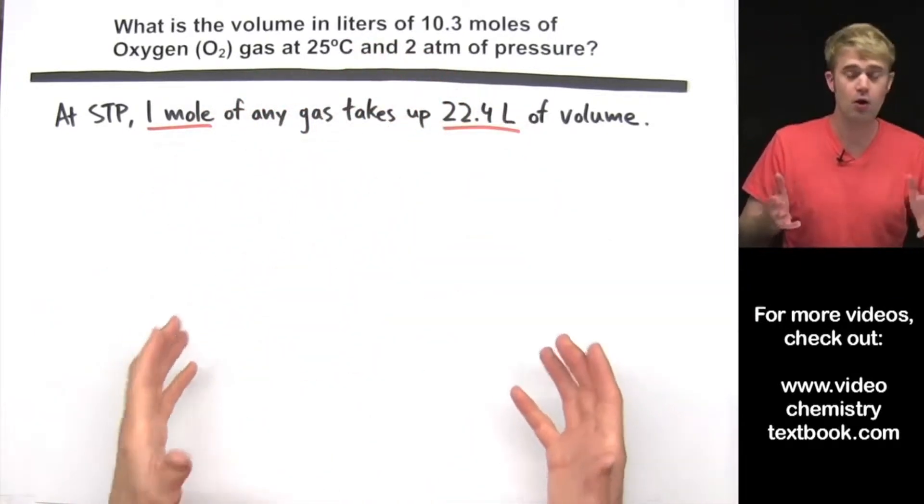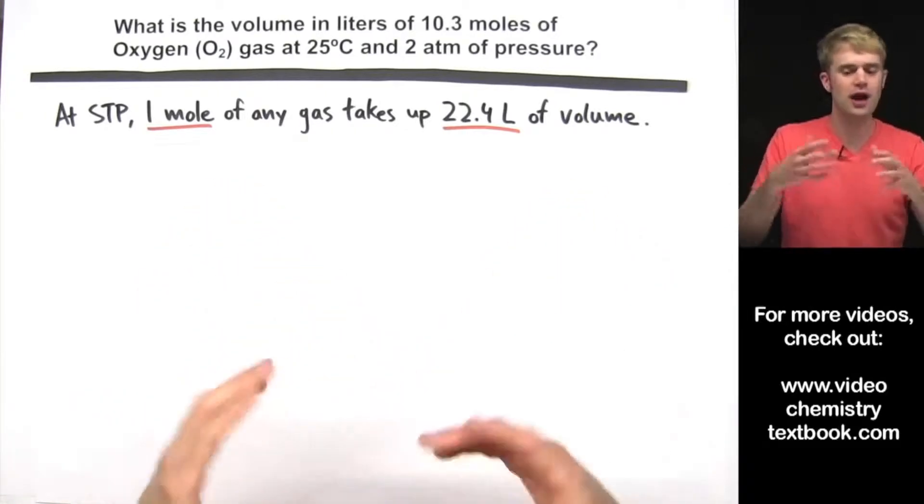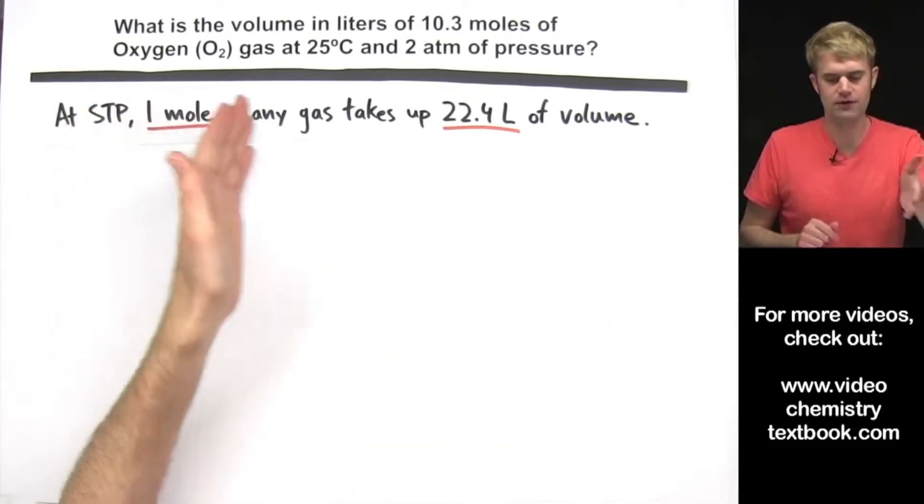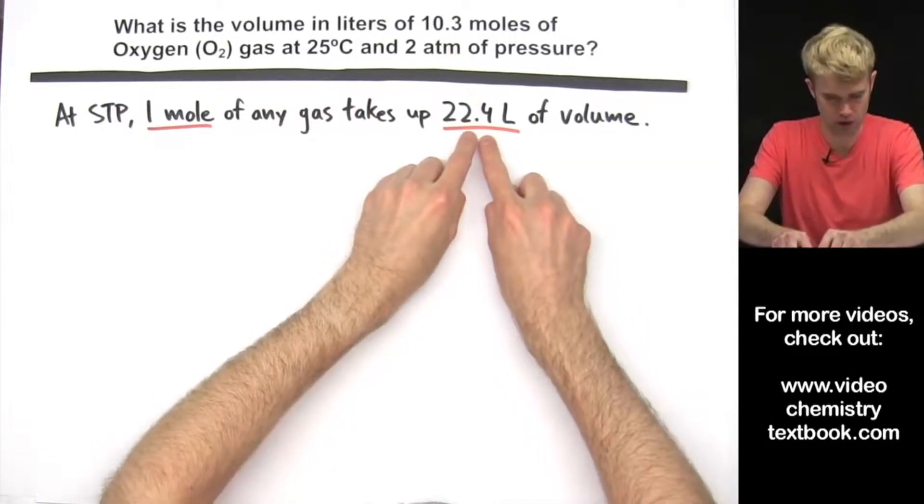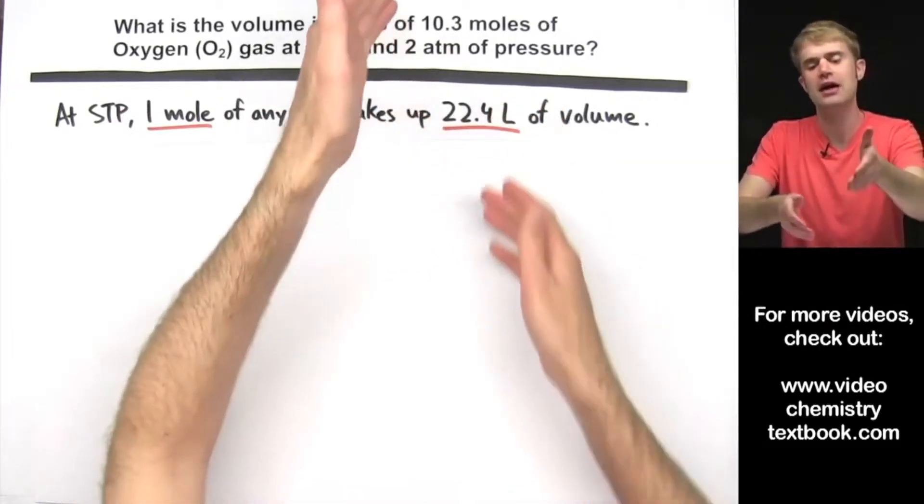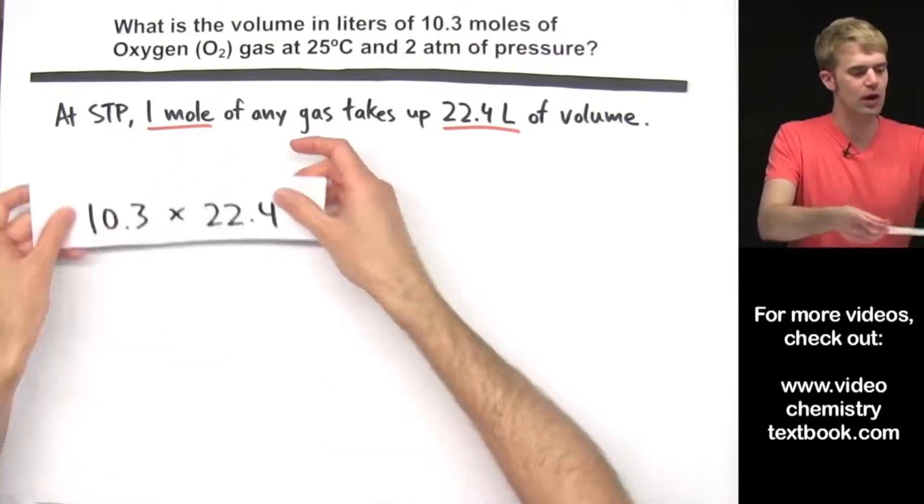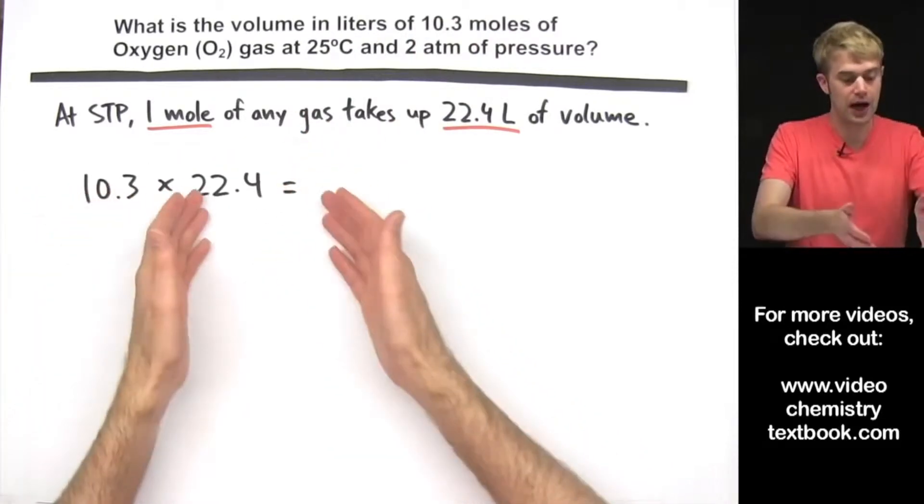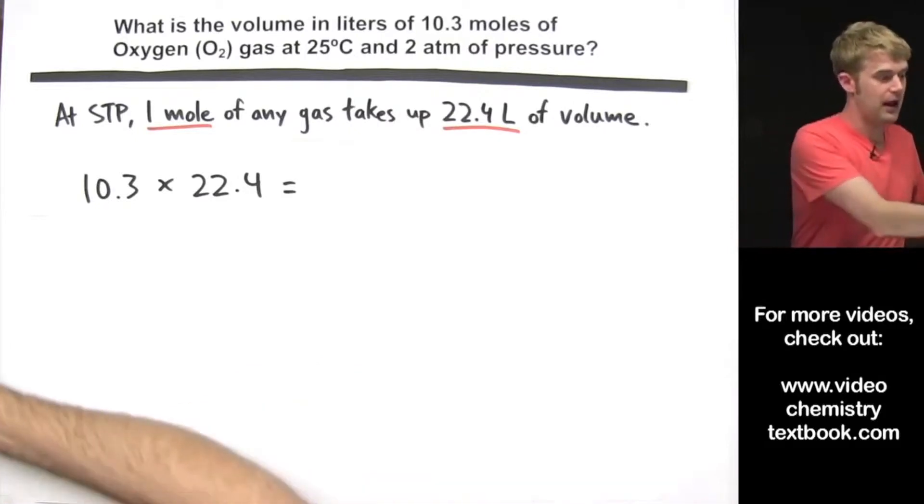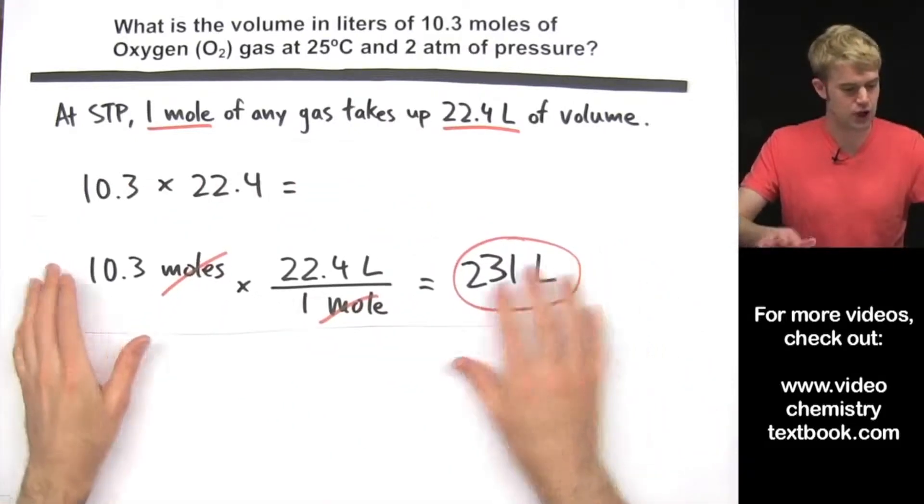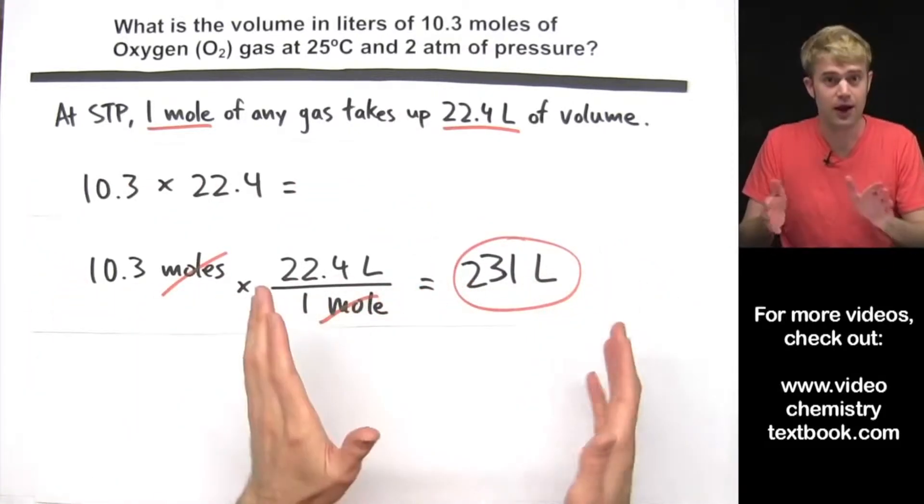To solve this, a lot of students would say, well, 1 mole of gas takes up 22.4 liters of volume and I have 10.3 moles instead of 1 mole, so I'm going to do 10.3 times 22.4 and you could use conversion factors to do it like this.